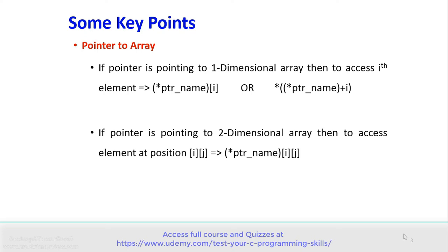If a pointer is pointing to a two-dimensional array, then to access the element at position i, j, the syntax used is: (*PointerName)[i][j].